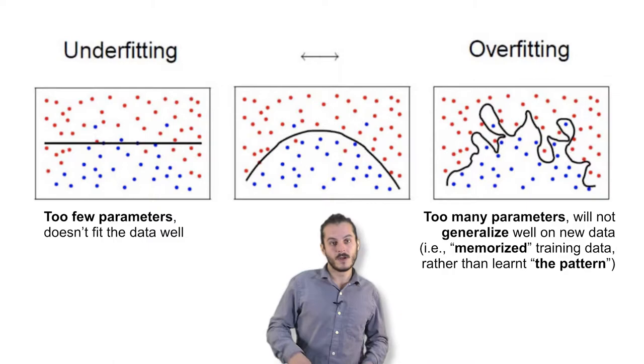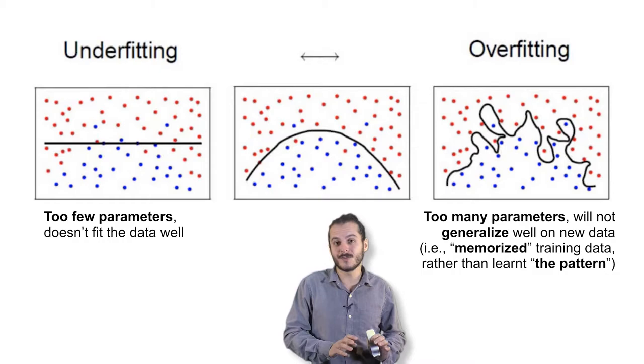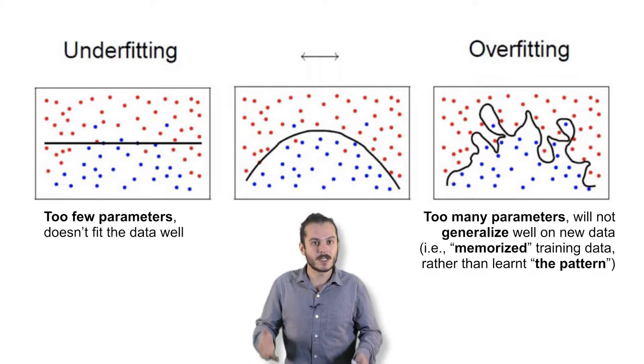On the other extreme is something called overfitting. Overfitting often arises because the model has too many parameters. There's too many knobs, and what happens is it just memorizes the training data set instead of learning the underlying concept in the training data set.